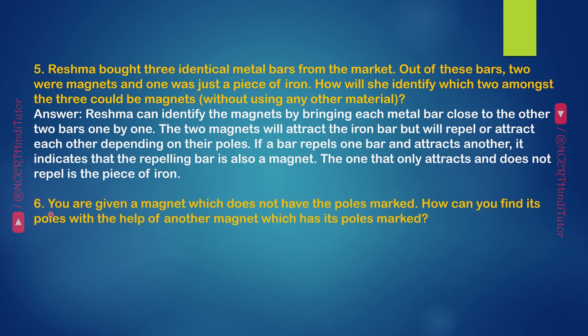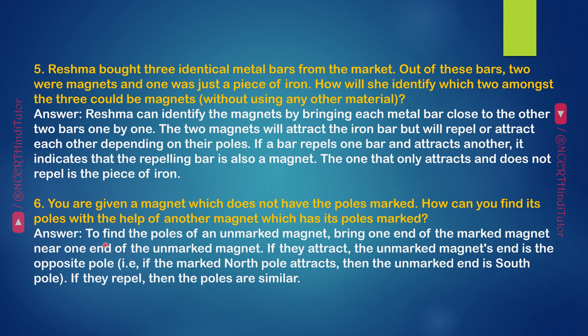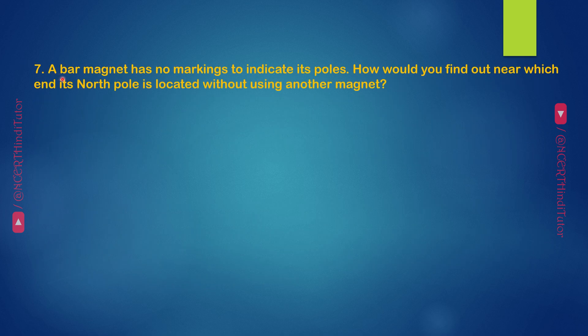Question 6: You are given a magnet which does not have the poles marked. How can you find its poles with the help of another magnet which has its poles marked? Answer: To find the poles of an unmarked magnet, bring one end of the marked magnet near one end of the unmarked magnet. If they attract, the unmarked magnet's end is the opposite pole. That is, if the marked north pole attracts, then the unmarked end is south pole. If they repel, then the poles are similar.